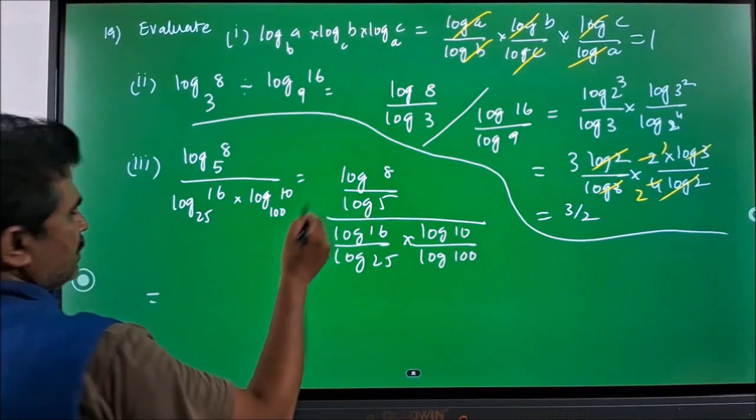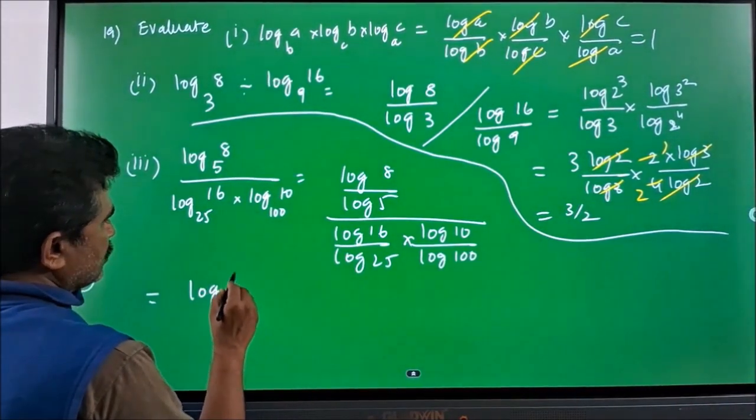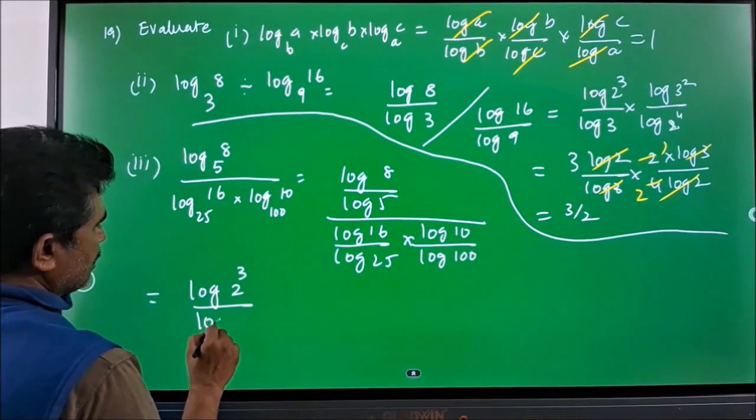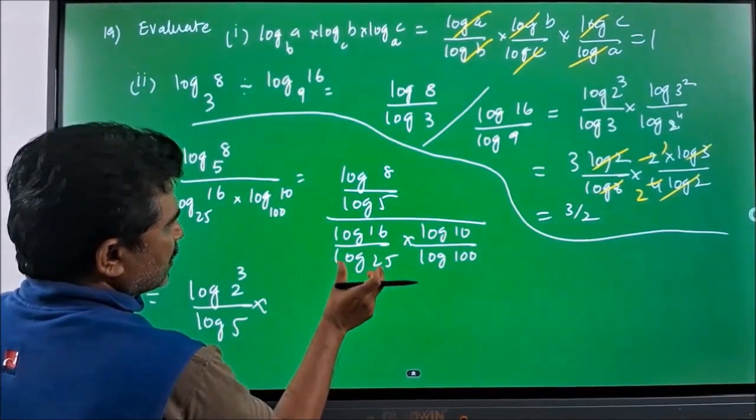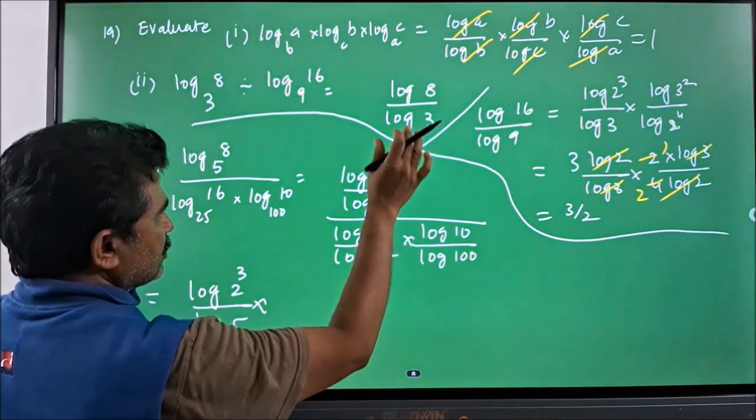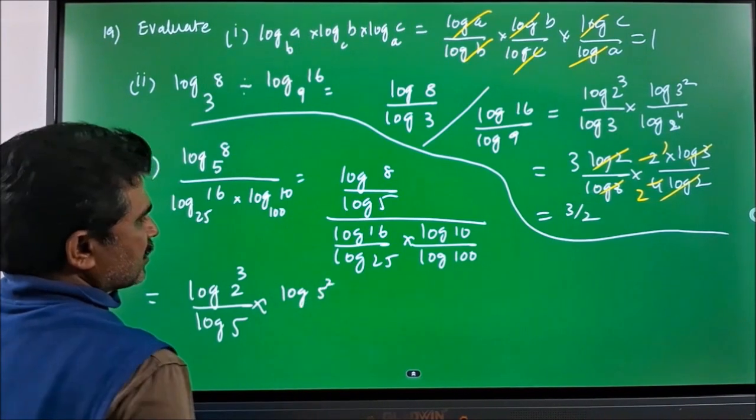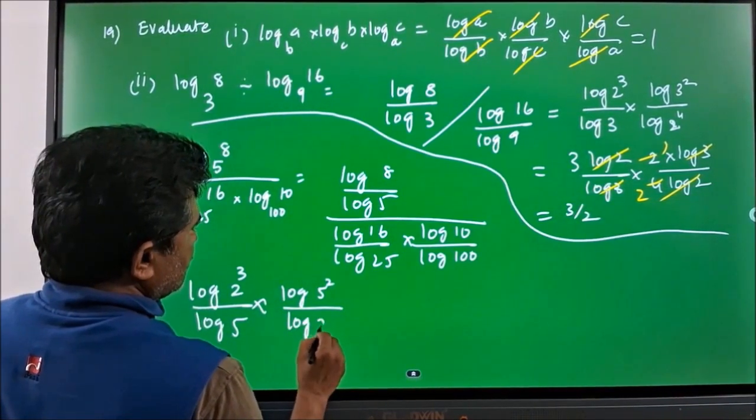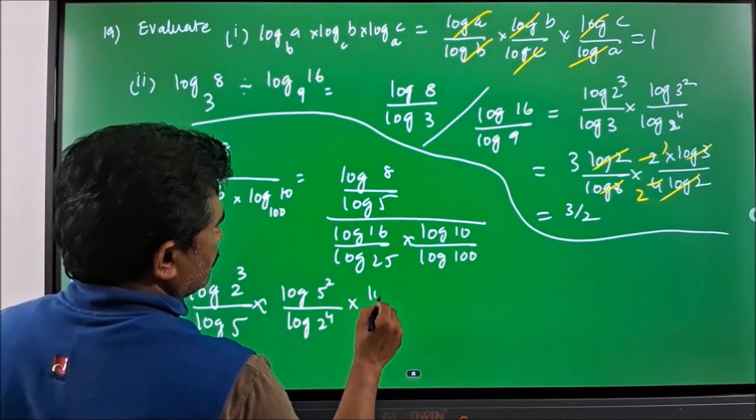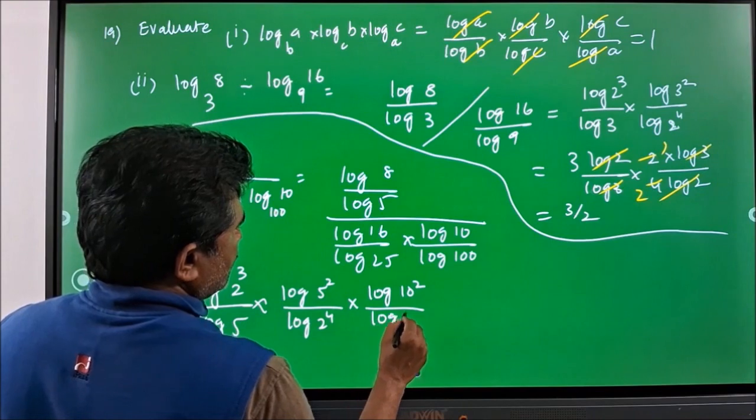Which in terms reciprocated and simplified like log 2 cube by log 5 into these terms will be reciprocated, and whatever the denominator here will become the numerator like log 25 I can write log 5 square by log 16 I can write 2 power 4 into log 100 I can write log 10 square by log 10.